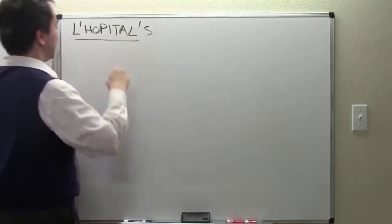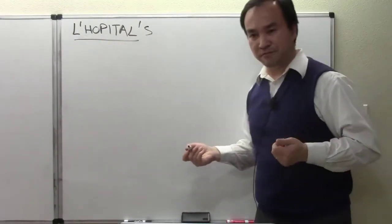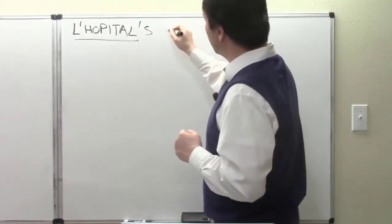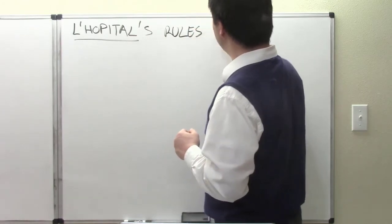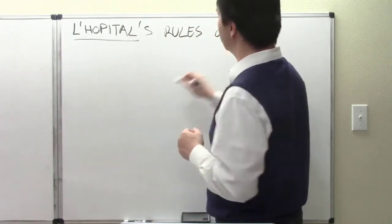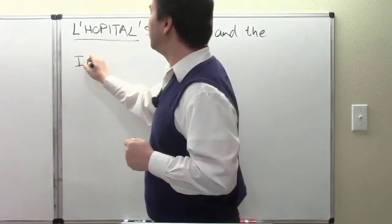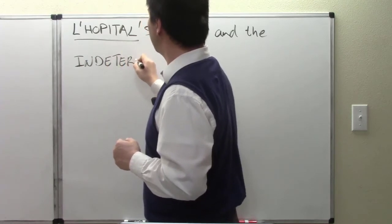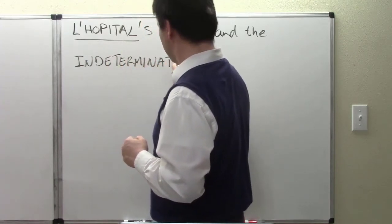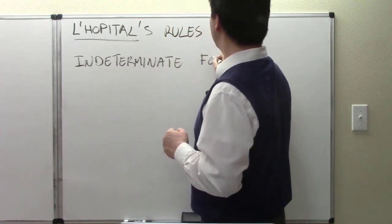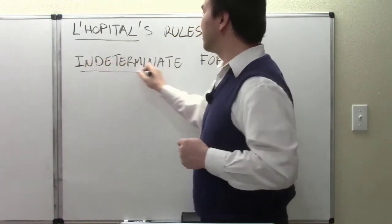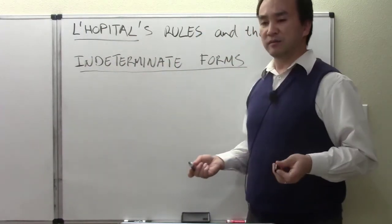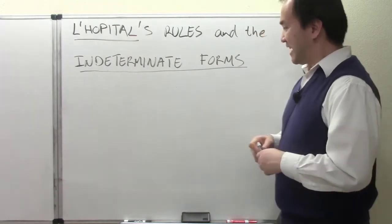L'Hôpital is the name of a French mathematician who came up with this rule. Along with learning what L'Hôpital's Rule is, we're also going to learn what it means for a limit to be in one of the indeterminate forms.